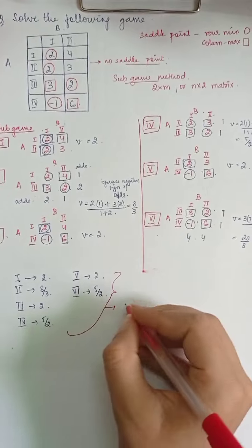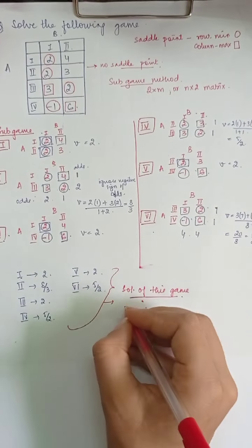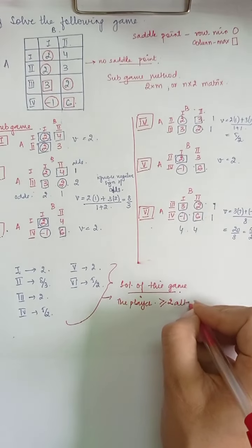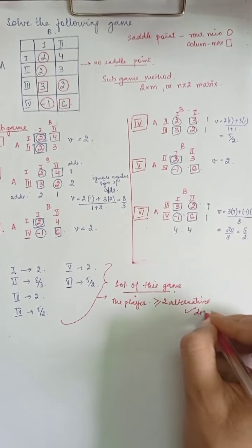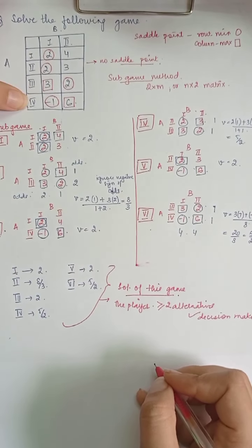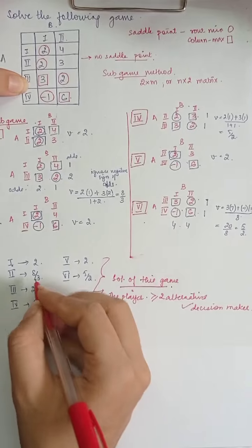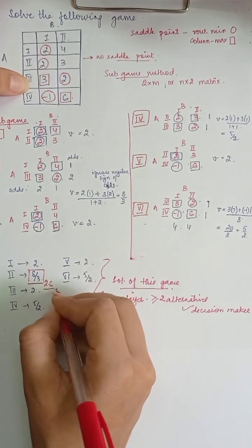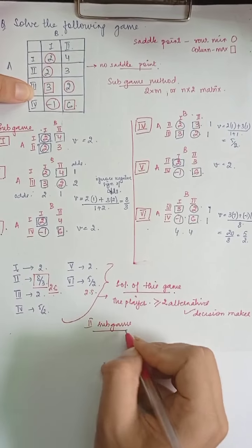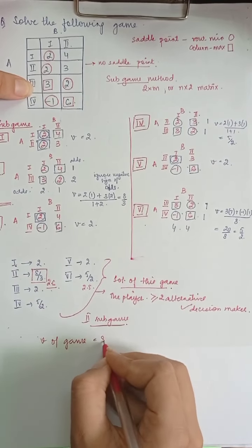Now that we have derived these values, we look for the solution of this game. The rule says the player who has more than 2 alternatives is the decision maker. Here, A has more options and is the maximizing player, so he maximizes his value. The maximum value is 8/3, which amounts to approximately 2.6 — higher than 5/2 = 2.5. So the maximum value is from subgame 2, and the value of the game is 8/3.